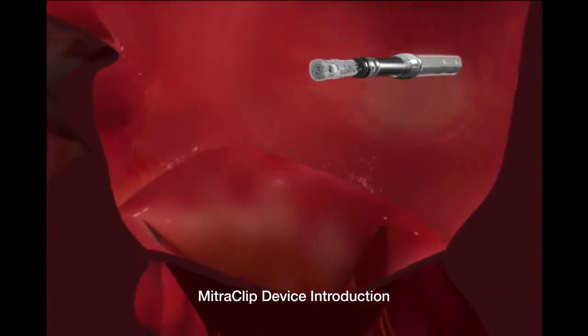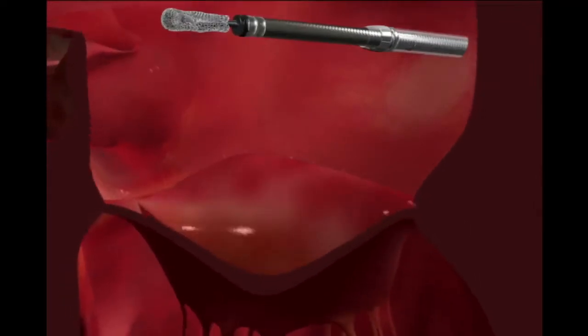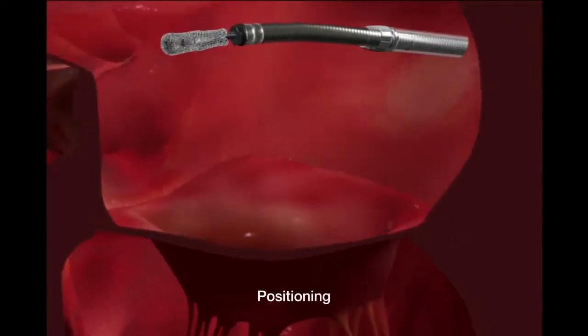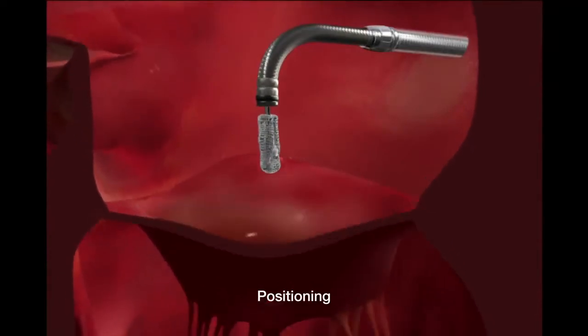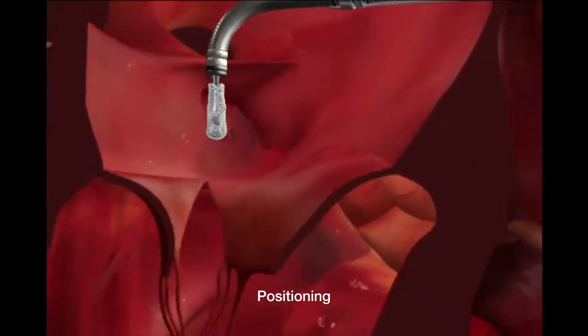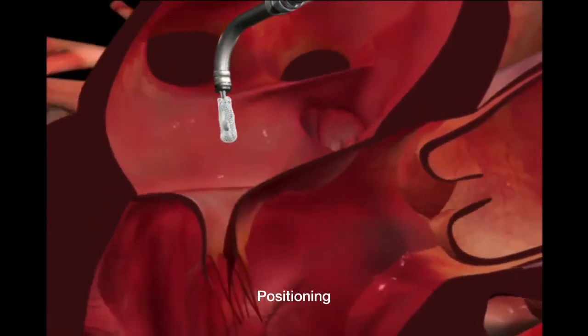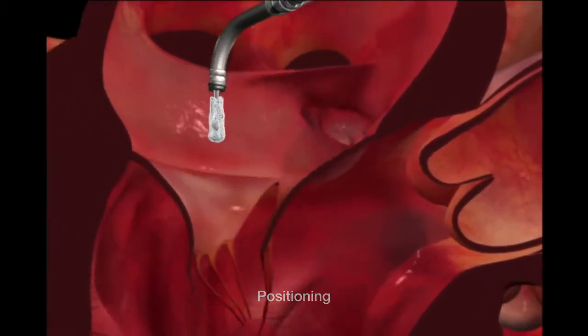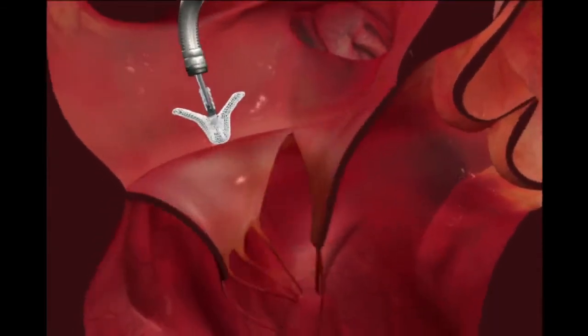The clip is gradually introduced into the left atrium. The clip is precisely positioned above the leak in the valve. The clip arms are opened in the left atrium for final positioning.